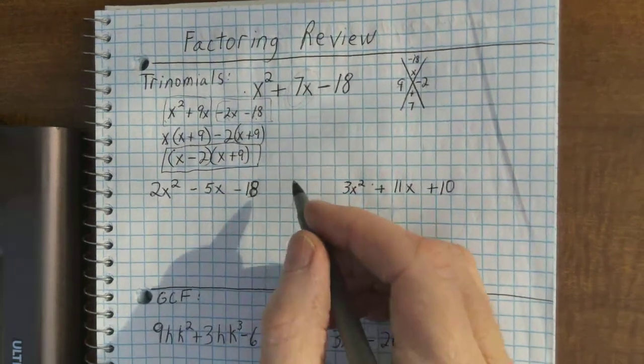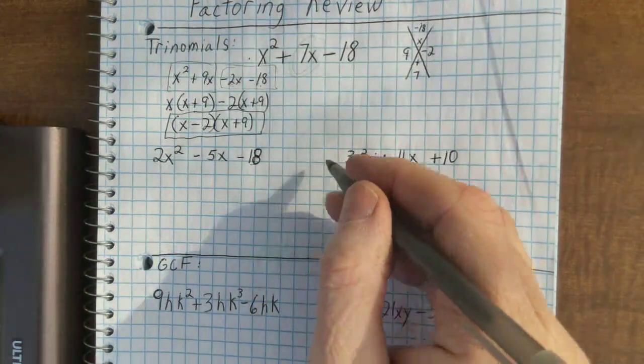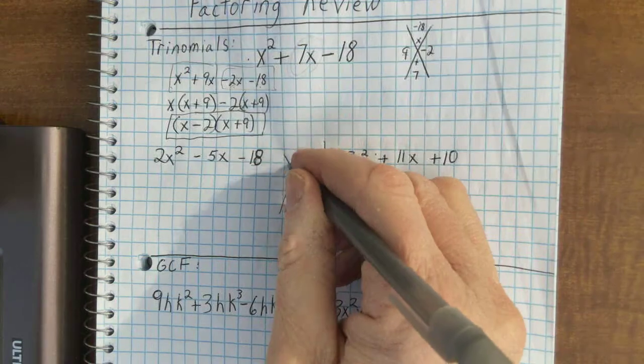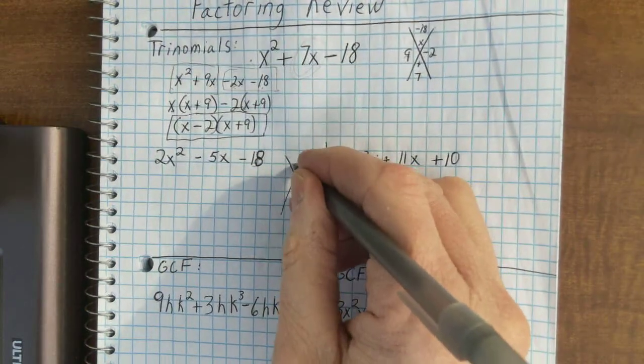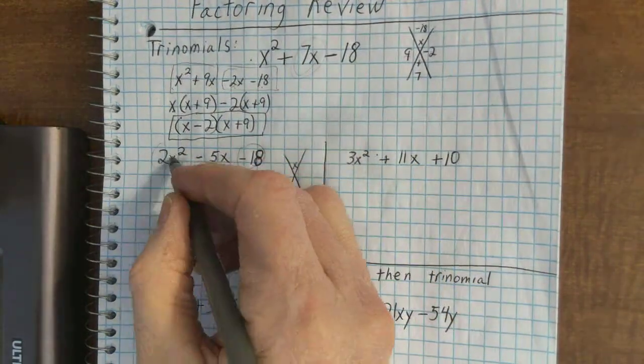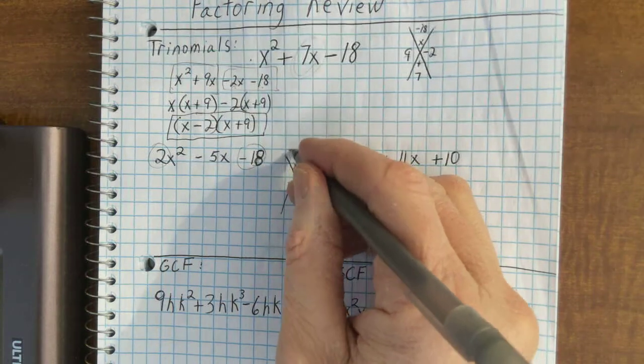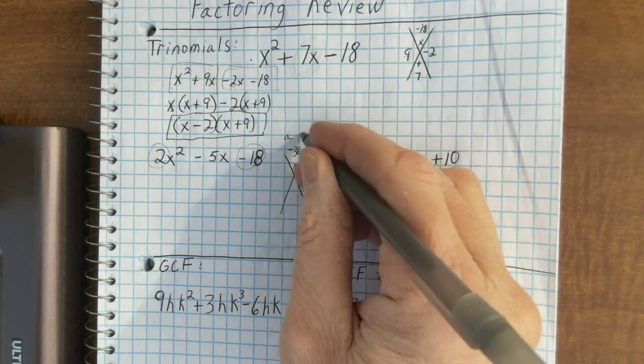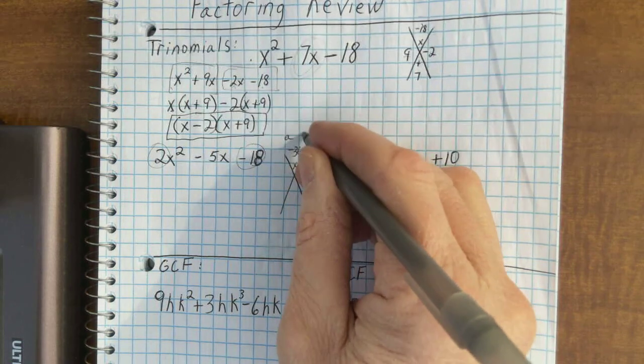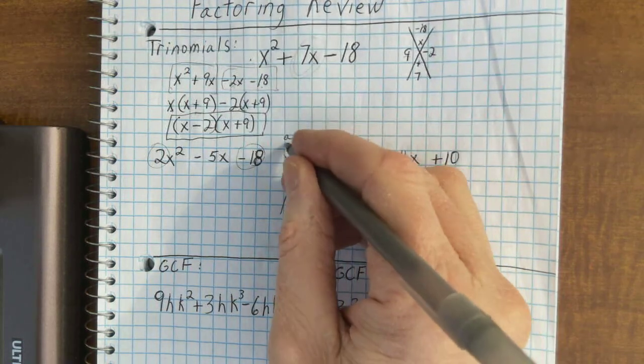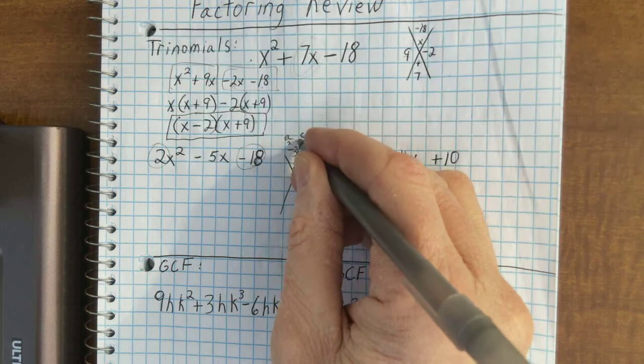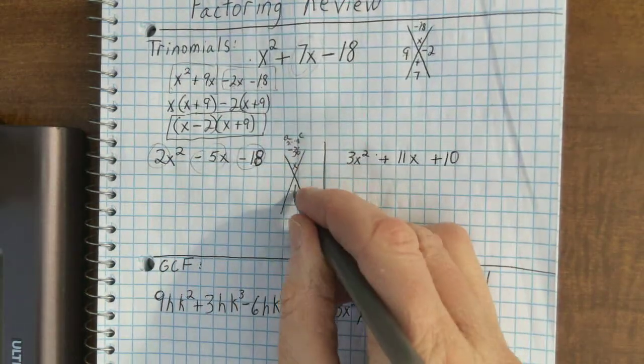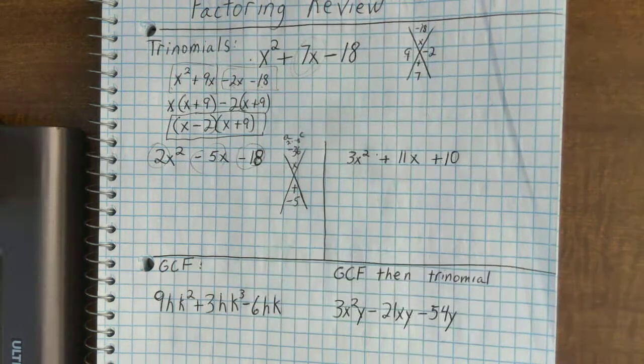Now, the second example, I need to take the negative 18 and multiply it by the 2. And that is negative 36. That's the a term. And that's the a coefficient and the constant, a times c. So 2 times negative 18. So I need two terms that multiply to negative 36 and add to negative 5.